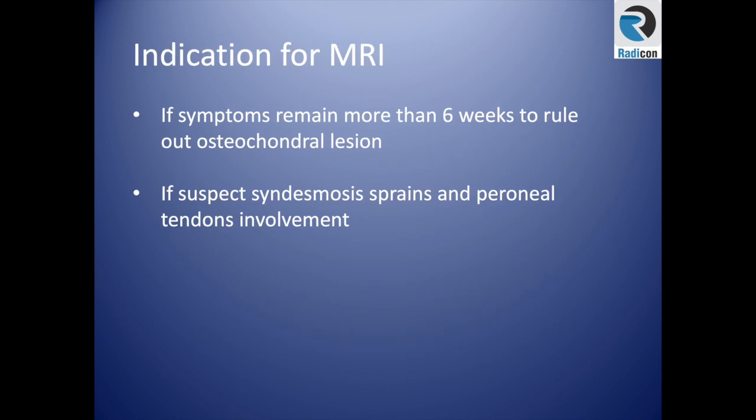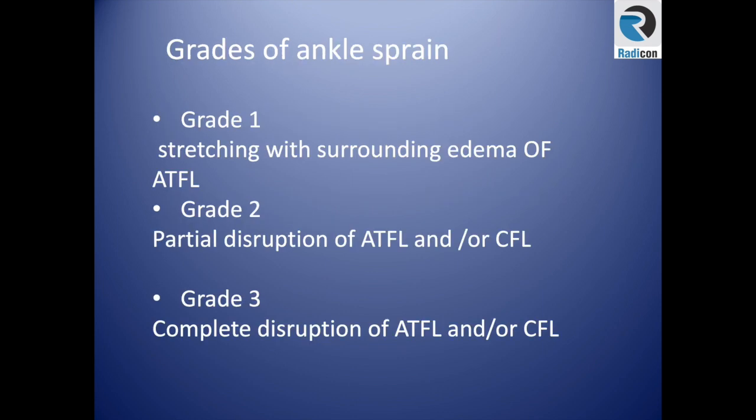There are general indications for MRI. Most athletes will get an MRI anyway, and MRI has been utilized more and more regardless of guidelines. Generally, if symptoms remain more than six weeks, or if you suspect an osteochondral injury, syndesmotic sprain, or peroneal tendon involvement, you should obtain an MRI. They grade it clinically and radiologically.